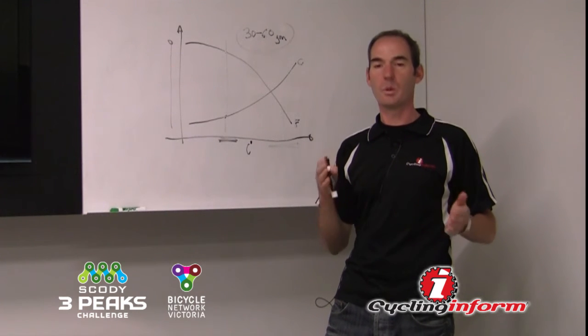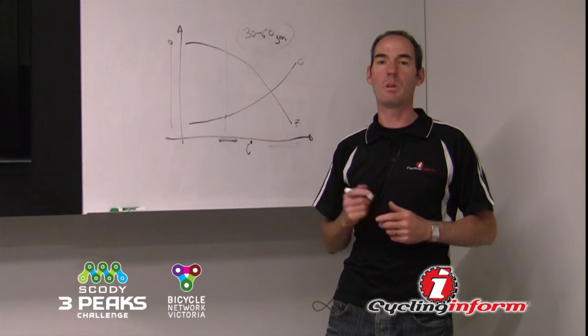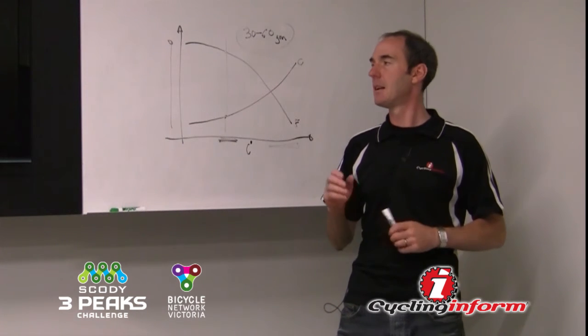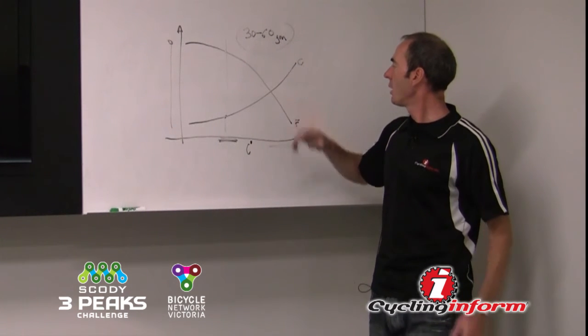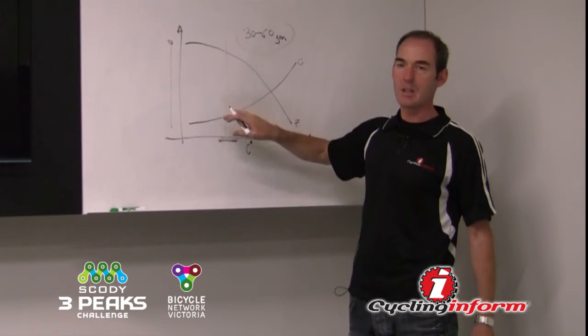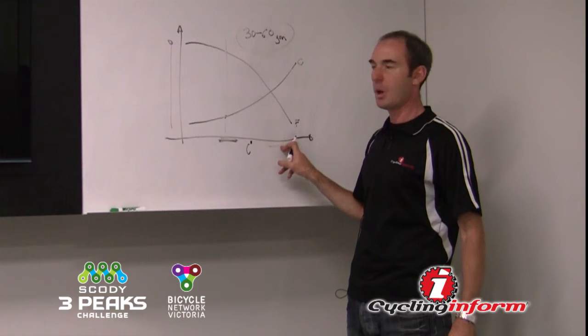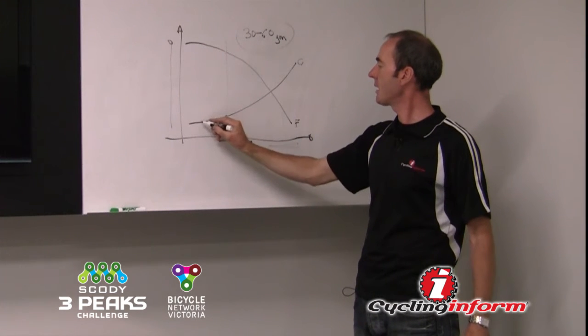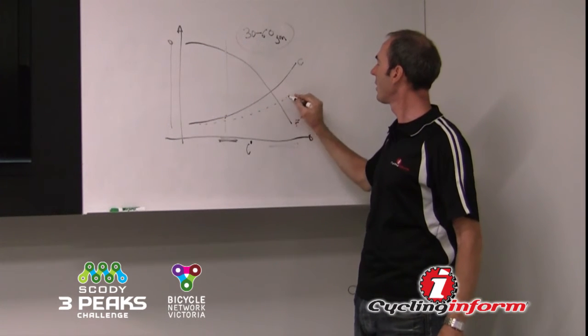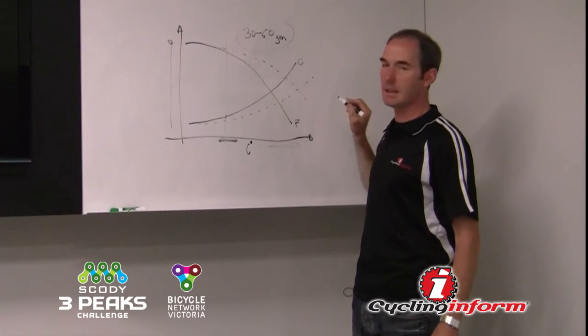Generally we work more towards what we call metabolic efficiency. So what we do with metabolic efficiency is that we work on improving the burn ratio. So at high intensities, we're actually burning less carbohydrate and more fat. So we're extending the curves.